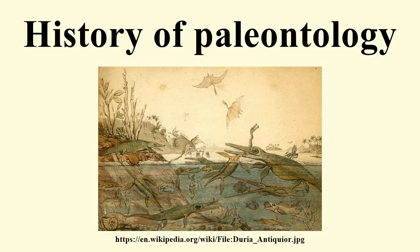This would encourage early evolutionary theories on the transmutation of species. After Charles Darwin published Origin of Species in 1859, much of the focus of paleontology shifted to understanding evolutionary paths, including human evolution and evolutionary theory. The last half of the 19th century saw a tremendous expansion in paleontological activity, especially in North America. The trend continued in the 20th century with additional regions of the Earth being open to systematic fossil collection, as demonstrated by a series of important discoveries in China near the end of the 20th century.